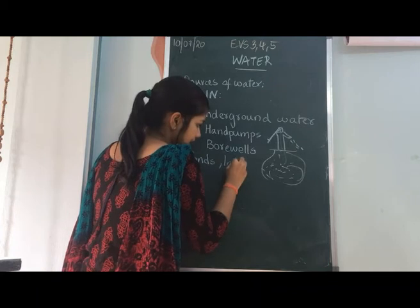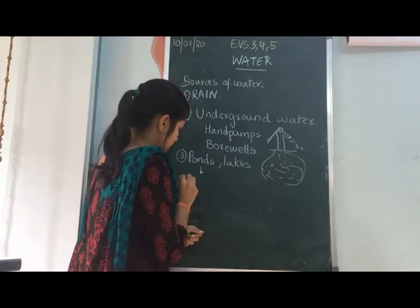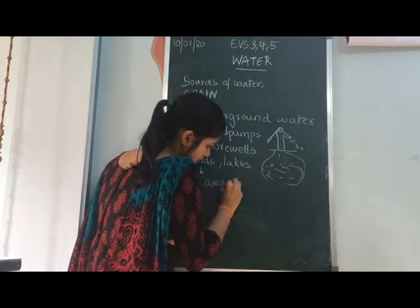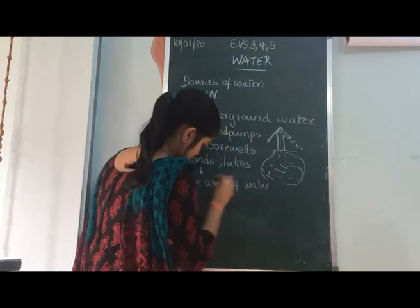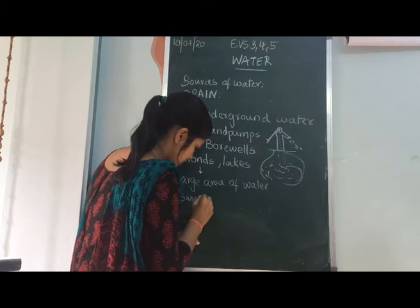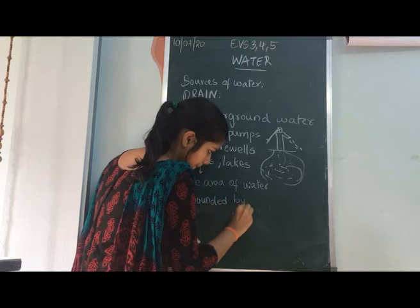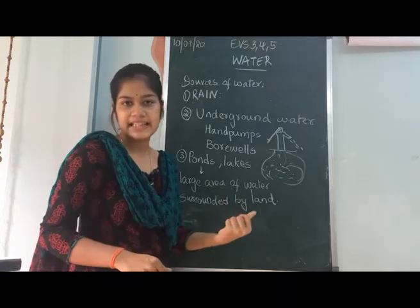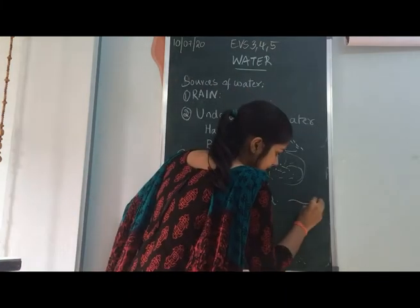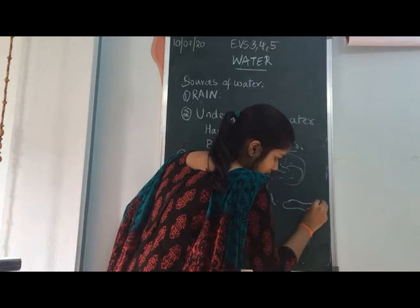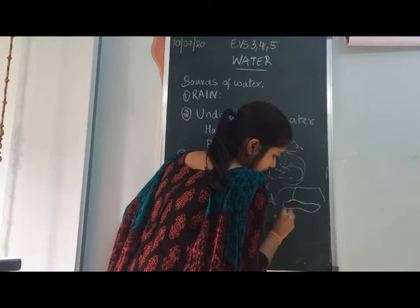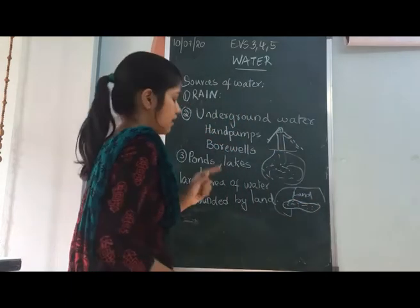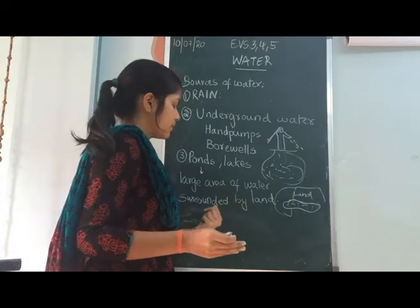Another source of water is ponds. A pond is a large area of water surrounded by land. There is water in the center and land all around it. This large surface of water surrounded by land is called a pond.